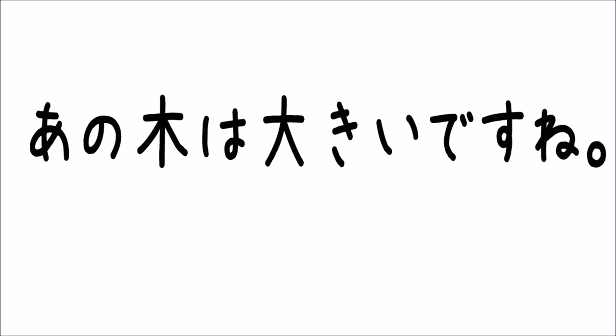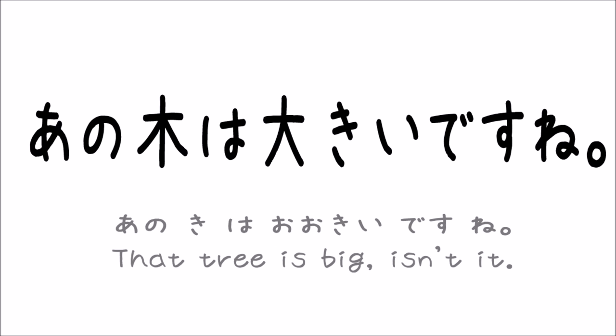Now let's try reading this sentence. Do you still remember the reading and the meaning of the second kanji from the first video? It looks like a man spreading his arms, right? And it means big. So this sentence means that tree is big, isn't it? So all together it is, ano ki wa ookii desu ne.